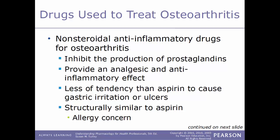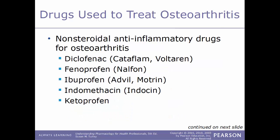Another type of drug used to treat osteoarthritis are the NSAIDs — nonsteroidal anti-inflammatory drugs. These inhibit the production of prostaglandins, providing an analgesic and anti-inflammatory effect. They have less tendency than aspirin to cause gastric irritation or gastric ulcers. They are structurally very similar to aspirin, so there is an allergy concern: if you are allergic to aspirin, you will most likely be allergic to these also. Common examples of NSAIDs for osteoarthritis include diclofenac (Cataflam or Voltaren), fenoprofen (Nalfon), and ibuprofen (Advil and Motrin).